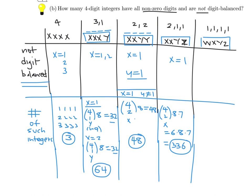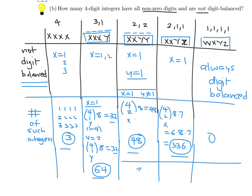The all-different case (xyzw) is always digit balanced since no digit appears more than once, so it contributes 0. Adding all cases: 3 + 64 + 48 + 336 = 451. That is the total number of four-digit integers with all non-zero digits that are not digit balanced.